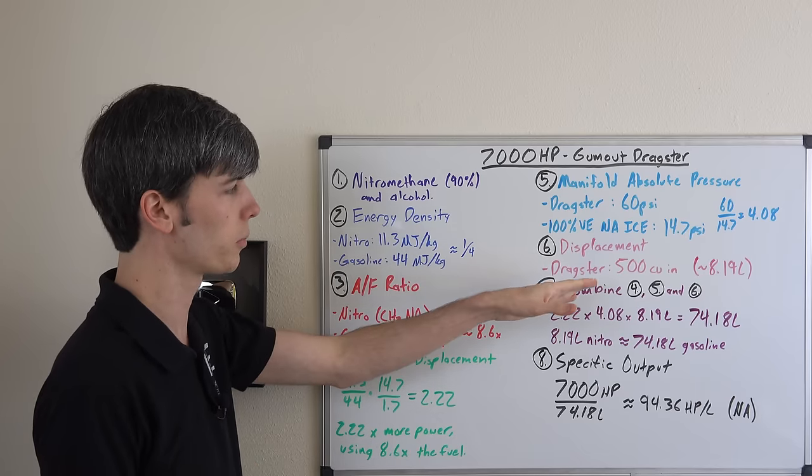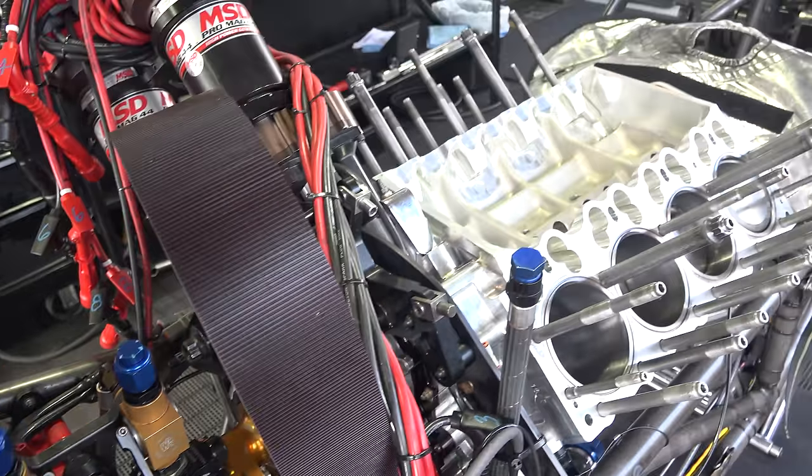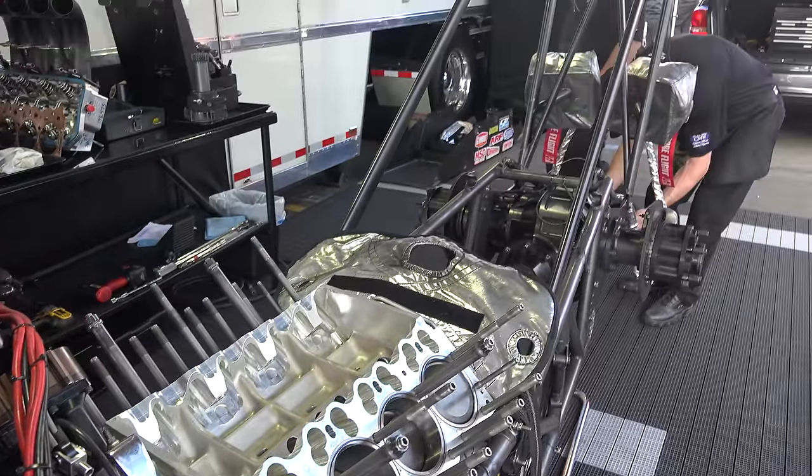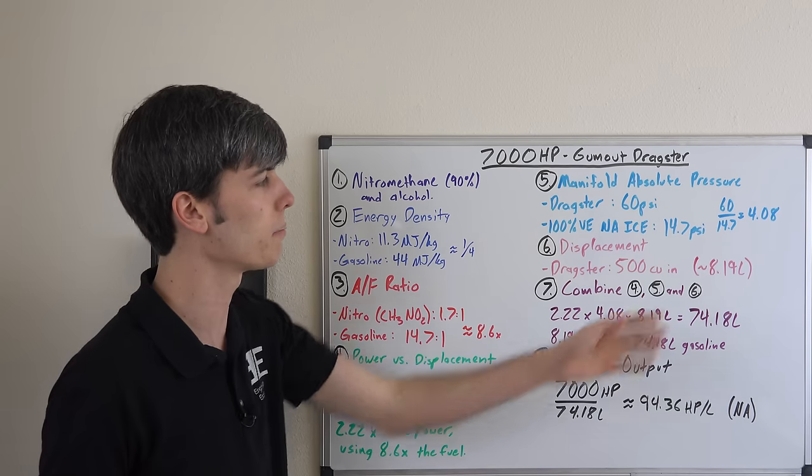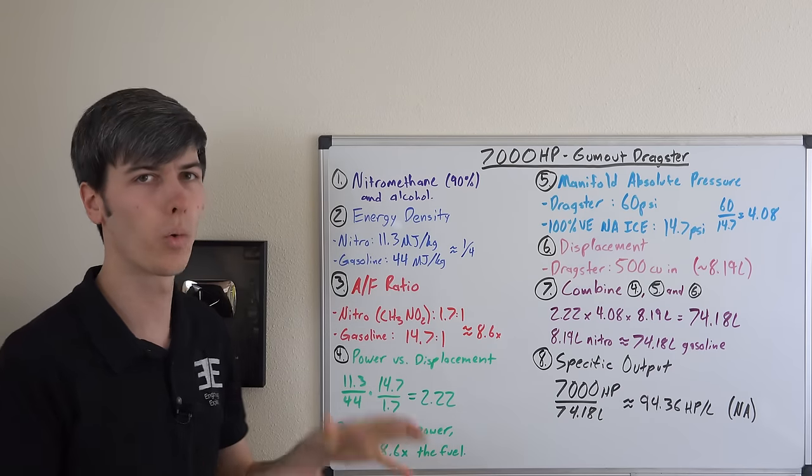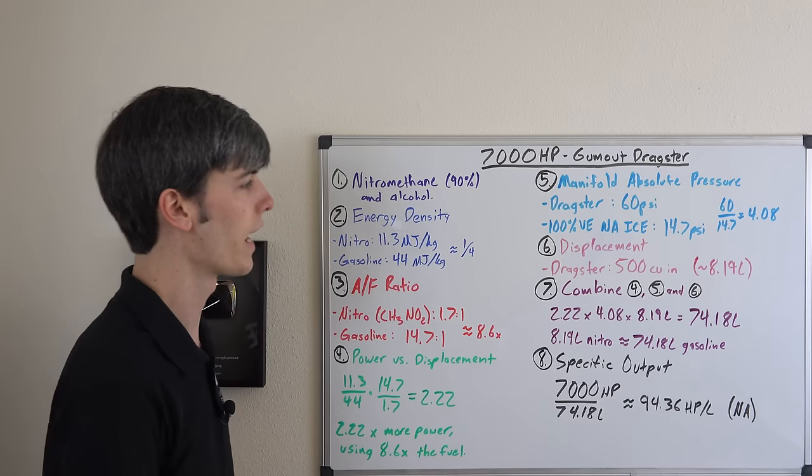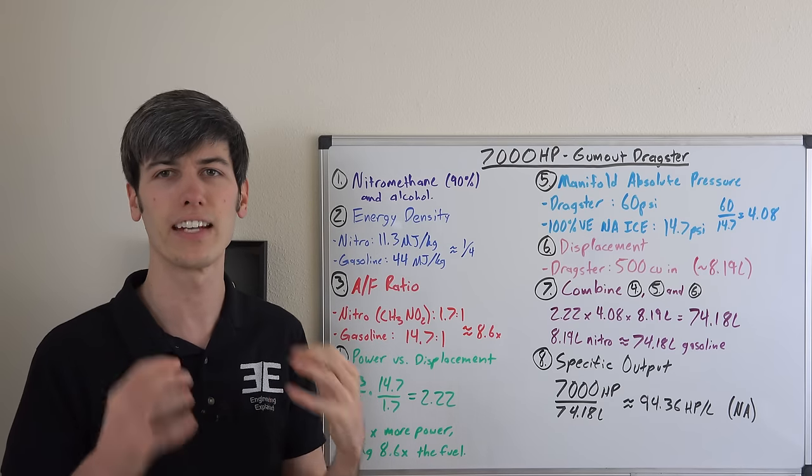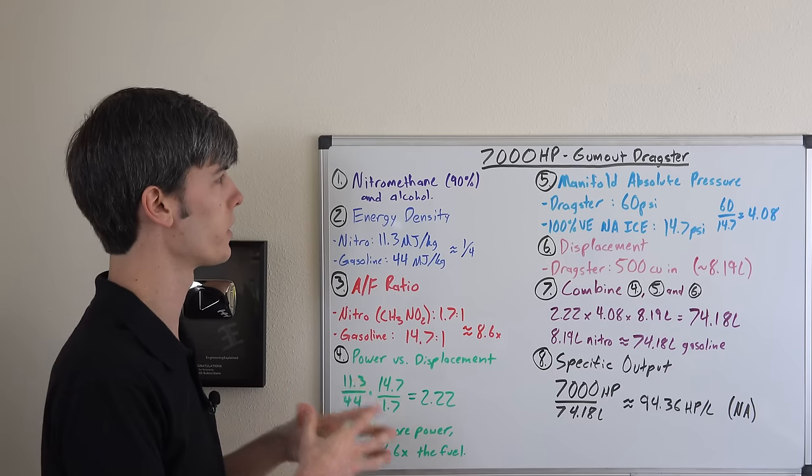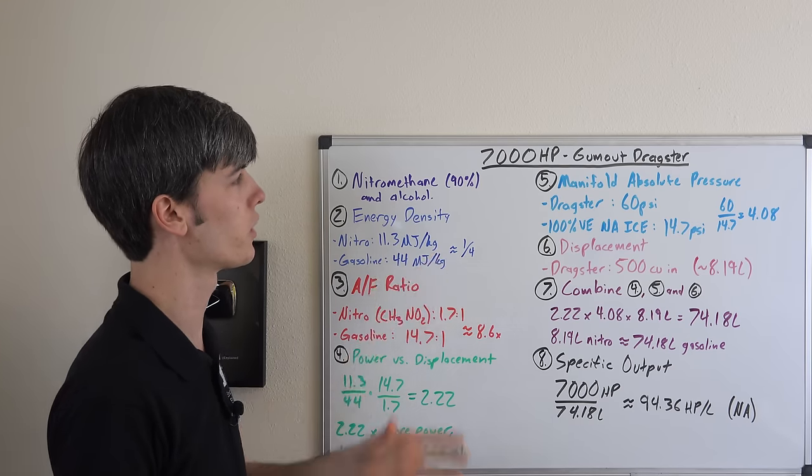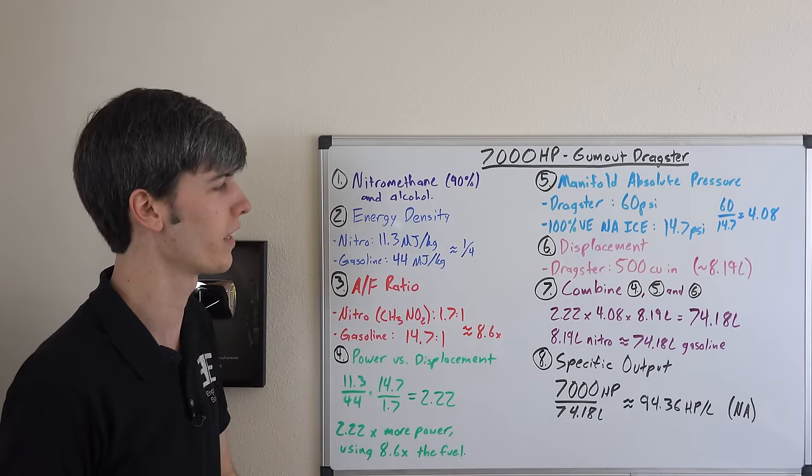Moving on to displacement, the maximum allowable size for these engines is 500 cubic inches, this is about 8.19 liters. What we're going to do now is combine what we've learned and find out the size of a naturally aspirated gasoline engine that would be equivalent to this 500 cubic inch supercharged nitromethane engine.